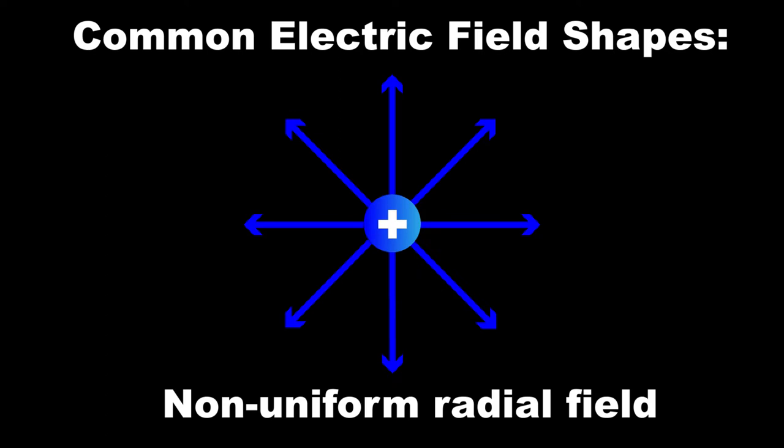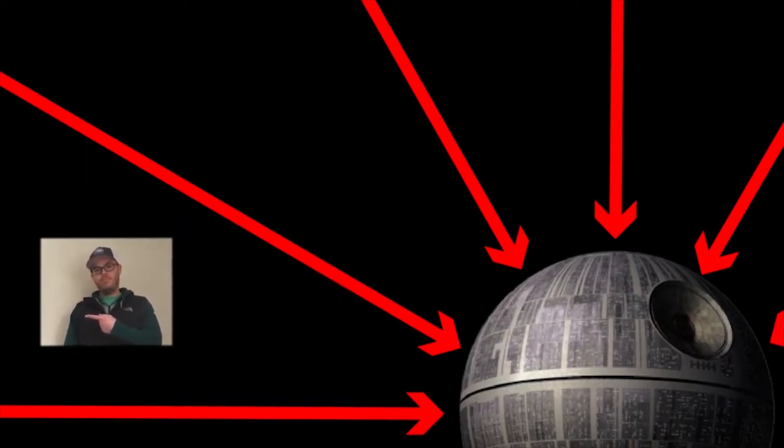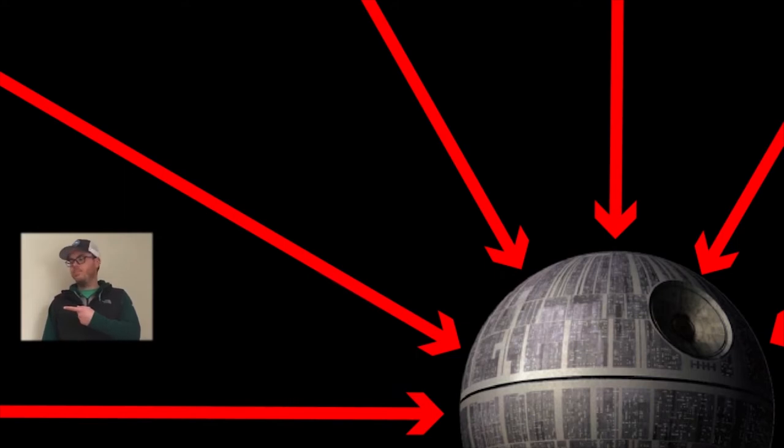There are lots of different shapes of electric fields, but a few common ones are non-uniform radial fields made by point charges like this. You might recognize that these look very similar to the gravitational field lines that we talked about back in the gravitational field line video of Physics 20.